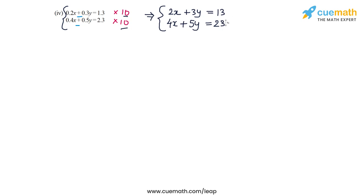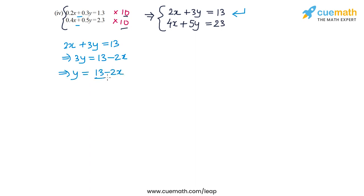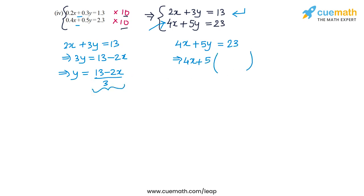Now let's solve this rewritten pair using the substitution method. Using the first equation, let's write y in terms of x. We have 2x plus 3y equal to 13, which means 3y equal to 13 minus 2x, or y equal to (13 minus 2x) by 3. Now I will substitute this value of y into the second equation: 4x plus 5y equal to 23. So instead of y, we write (13 minus 2x) by 3, giving 4x plus 5 times (13 minus 2x) by 3 equal to 23.